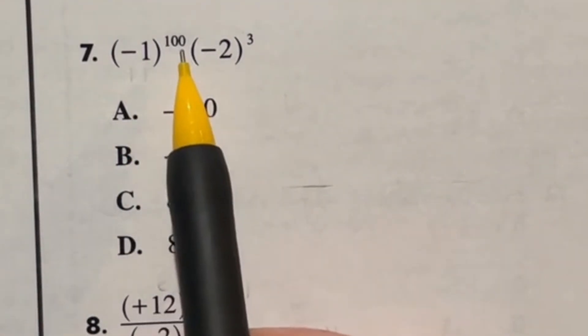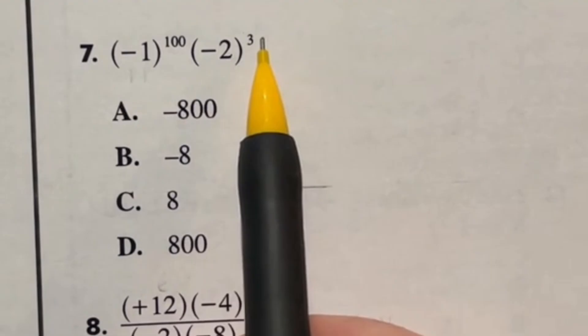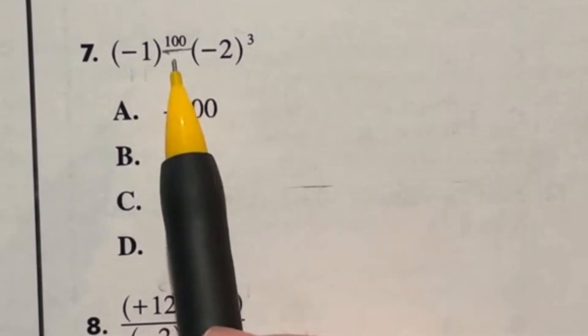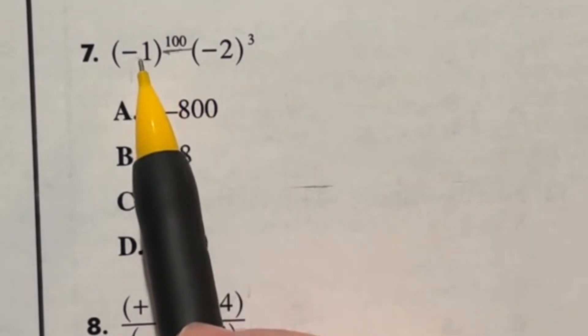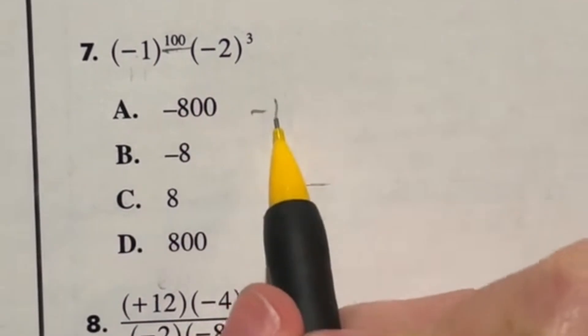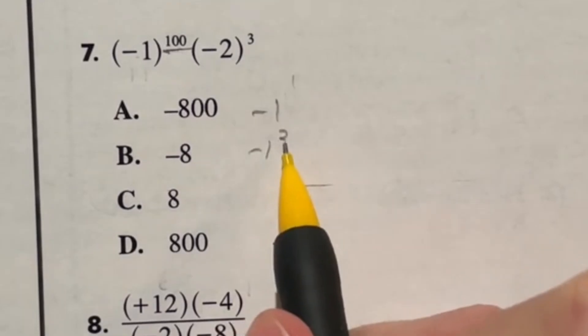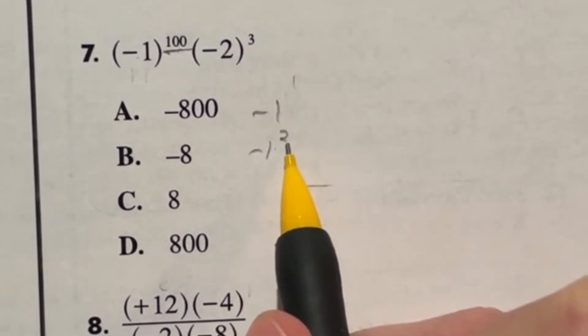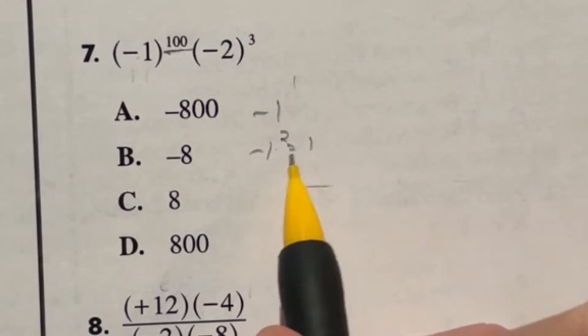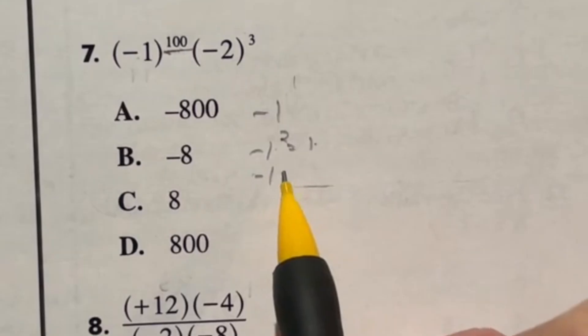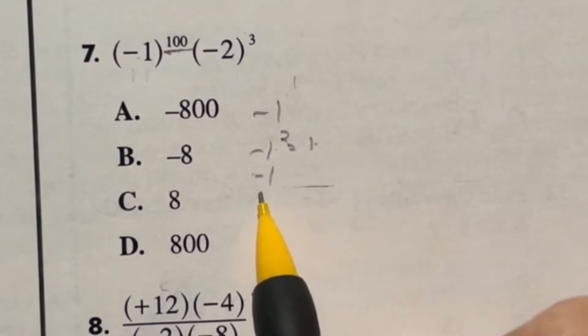Let's go ahead and take a look at number seven. It says negative one to the 100th power times negative two to the third power. So what's the deal with this 100th power? Well, it's actually just trying to tell us if this number is going to be even or odd. Because if I take negative one to the first power, that's negative one. Negative one to the second power means I do negative one times negative one, giving me a positive one. To the third power would be multiplying that by another negative one, making it negative again. Then to the fourth power would make it positive again.